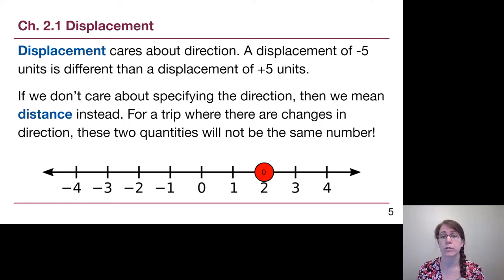Distance is actually a separate idea in physics. When we have a trip where there's changes in directions, it's really important to understand that distance and displacement will not match each other if we turn around and come back. In this example where we start at 2 and end at negative 3, the displacement is negative 5 units and the distance is just 5 units, not caring if it's negative or positive.